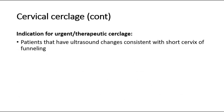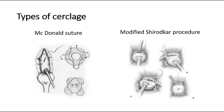The indication for urgent cerclage includes patients with ultrasound changes consistent with a short cervix. Types of cerclage include the McDonald's suture, where a running suture is placed in the body of the cervix near the internal os to encircle it, then tightened to reduce the cervical canal to 5–10 mm.